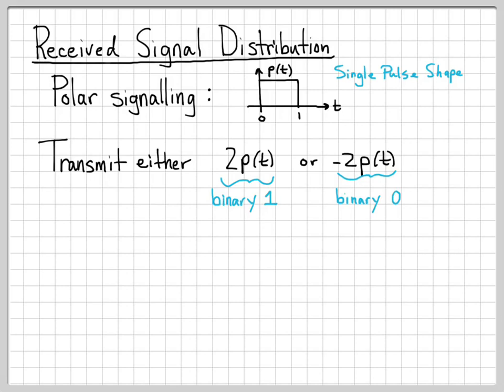I'm using positive and negative pulses, multiplied by 2, just to have something to look at here. This is what we call polar signaling, because we have a single pulse shape and the information is contained in the polarity of the pulse — whether it's a positive pulse or a negative pulse.